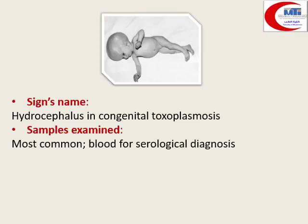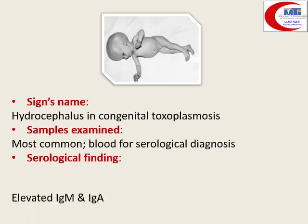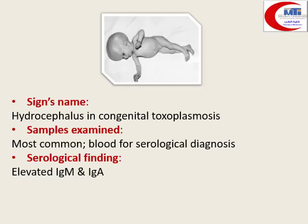The expected serological findings in the baby: elevated IgM and IgE indicate acute infection. Persistent IgG means the mother has the infection, not necessarily a recent infection in the baby, because IgG can cross the placenta — but IgM and IgE cannot cross the placenta, so their presence in the baby indicates acute toxoplasmosis.